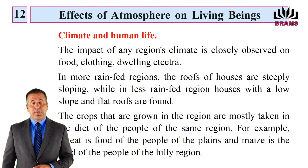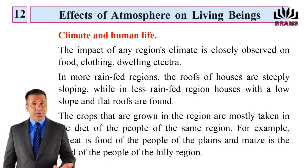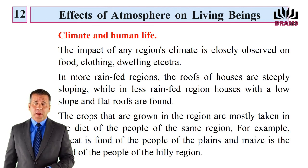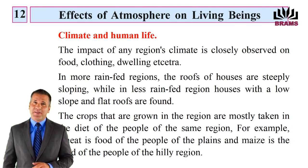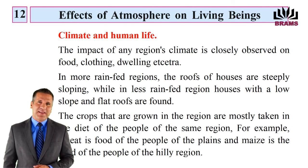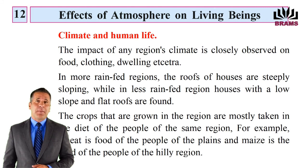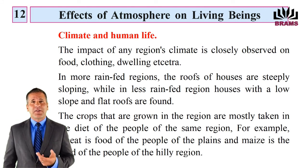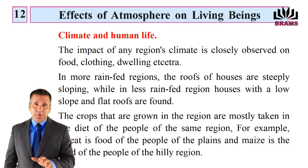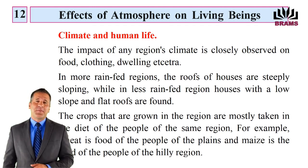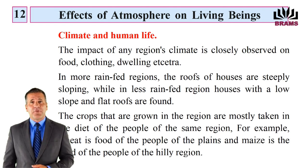Climate and Human Life: The impact of any region's climate is closely observed on food, clothing, dwelling etc. In more rain-fed regions, the roofs of houses are steeply sloping, while in less rain-fed regions, houses with a low slope and flat roofs are found. The crops grown in a region are mostly taken in the diet of the people of the same region; for example, wheat is food of the people of the plains and maize is the food of the people of the hilly region.